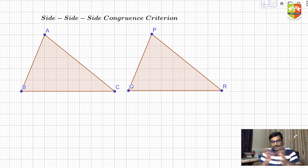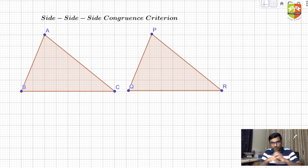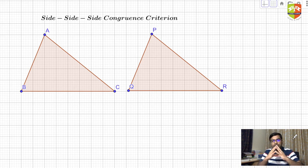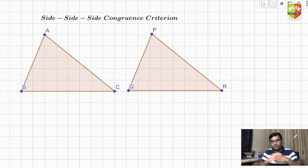The session is structured like this: in the first part we are going to explain what this congruence criterion means, and subsequently we will prove that the statement of this criterion is actually true — so we will get a general proof for it. After this we will also do one more session.